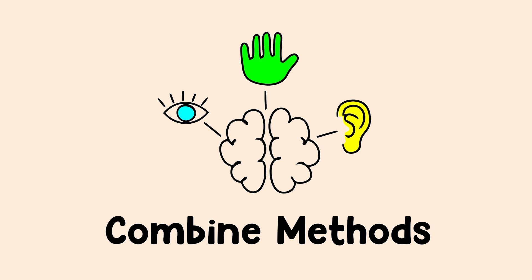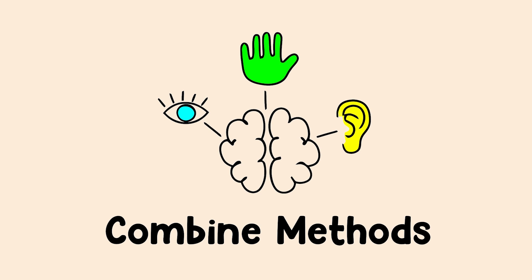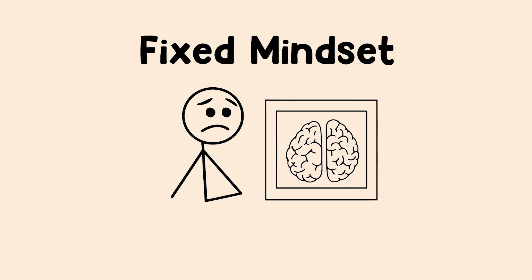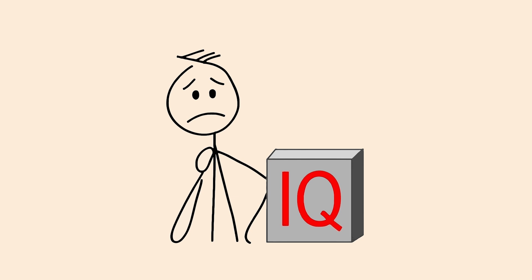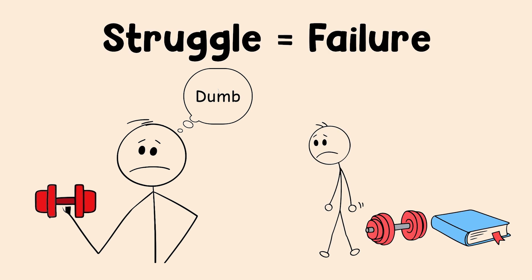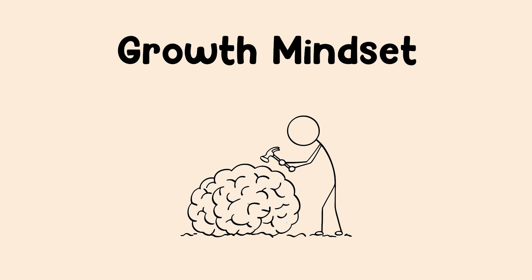The truth is, we all learn best when we combine multiple methods. And this leads to the final, crucial idea. Psychologist Carol Dweck calls it having a growth mindset. People with a fixed mindset believe intelligence is something you're born with. You're either smart or you're not. So when studying feels hard, they think it's a sign they're dumb, and they quit or go back to easy, useless rereading.